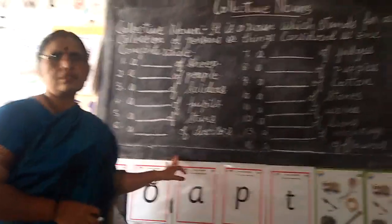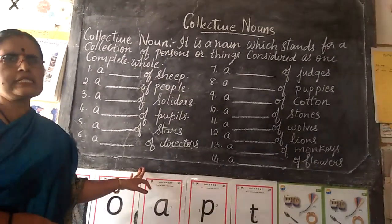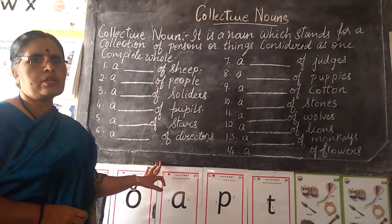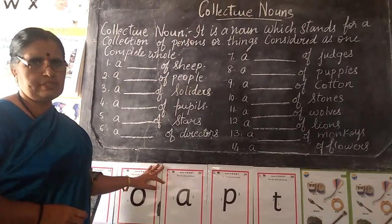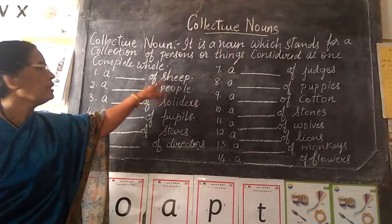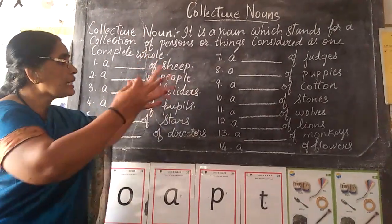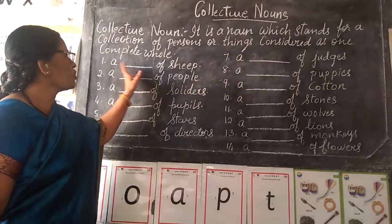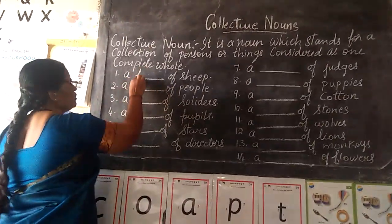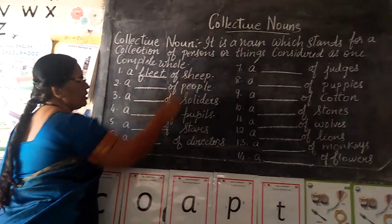Here are some incomplete sentences. Let me explain to you how these can be filled. A dash of sheep — when we talk about a collective noun, we are talking about the collection of sheep. A fleet of sheep.